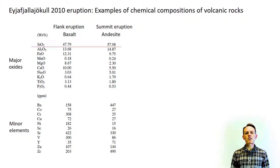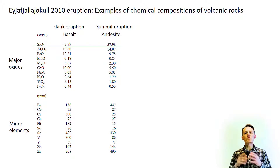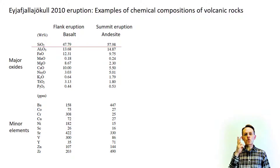Looking at magma on the atomic scale, one finds that to a considerable extent it is made out of silicon dioxide molecules — the combination of one silicon atom, Si, and two oxygen atoms. Silicon dioxide is also referred to as silica.